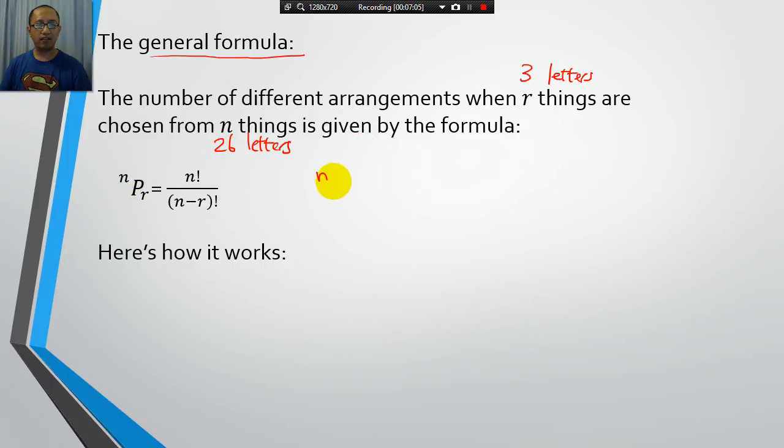So this is the formula. NPR equals N factorial over bracket N minus R factorial. Now, because N is 26, we're picking from 26 letters, R is 3. We have to pick three letters out of 26. So you put 26 where N is in the formula, and you put 3 where R is in the formula.